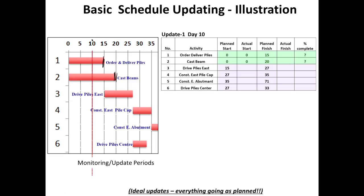Let us say we are 10 days into the project. On the 10th day I want to do an update — what data am I going to look for? I have put up a table of typical data I might collect. In this exercise, I am going to assume everything is ideal, everything is going as planned. I am only illustrating where the values go. This is unlikely to happen exactly as illustrated, but it is more for illustration's sake.